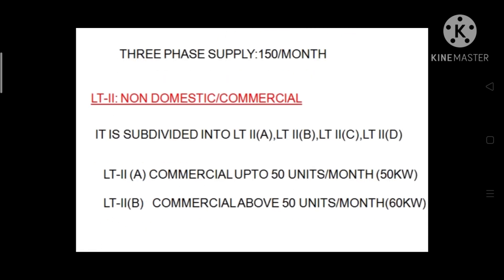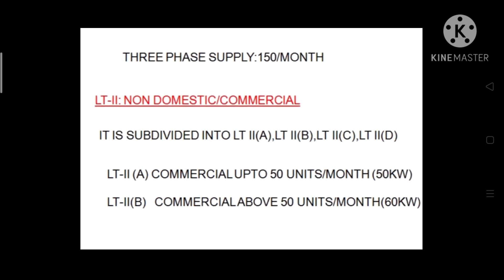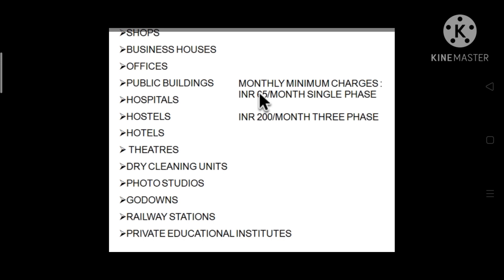The second category is non-domestic commercial loads — LT2. This includes shops, business houses, offices, hospitals, hotels, theaters, photo studios, and all government sector places. The minimum charge for single phase supply under LT2 is 65 rupees per month, and for three phase supply it is 200 rupees per month.